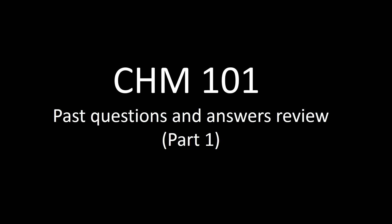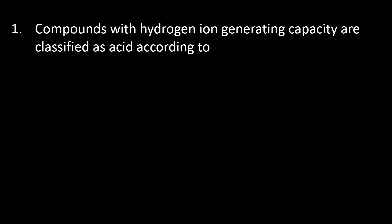Compounds with hydrogen ion generating capacity are classified as acids. According to the answer is Arrhenius acid-base theory.